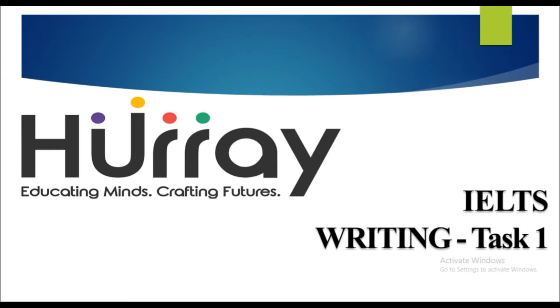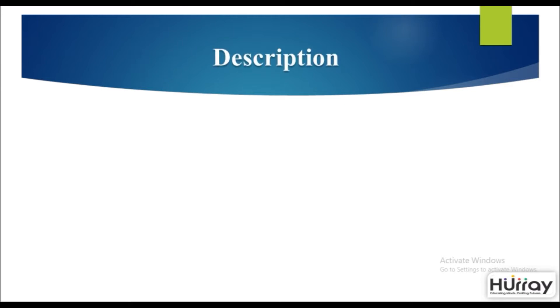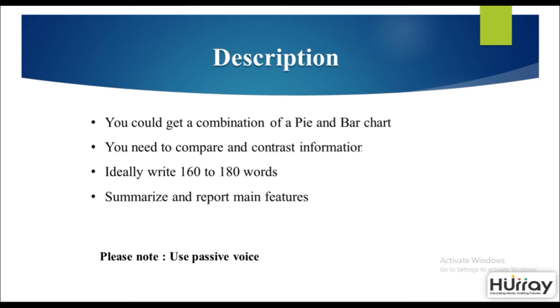Welcome to Hurray IELTS writing task 1. This is report writing — a comparison between a pie chart and a bar graph. This type of task may involve a combination of both, and you need to compare and contrast the information. You are suggested to write 160 to 180 words, summarizing and reporting the main features.